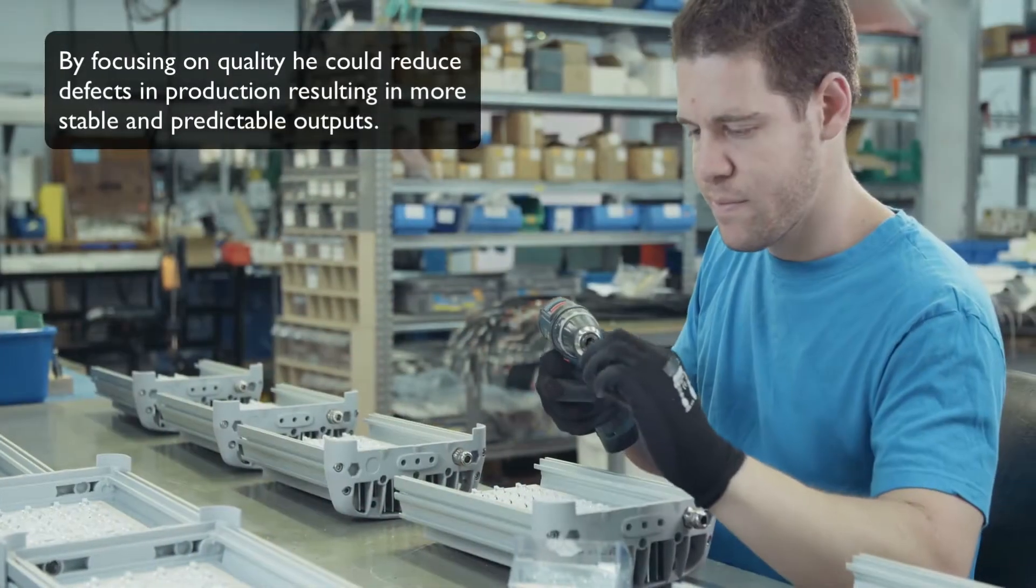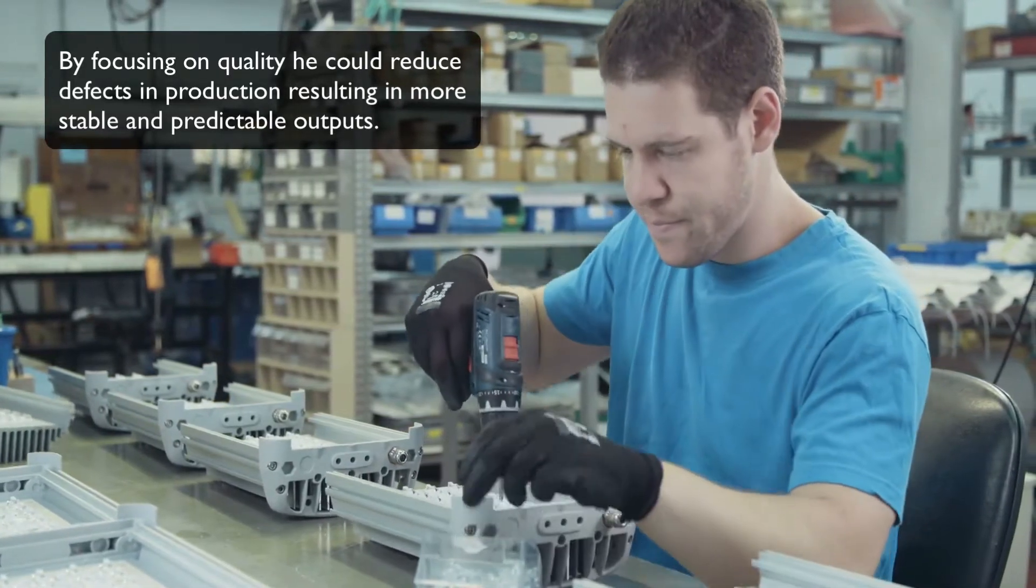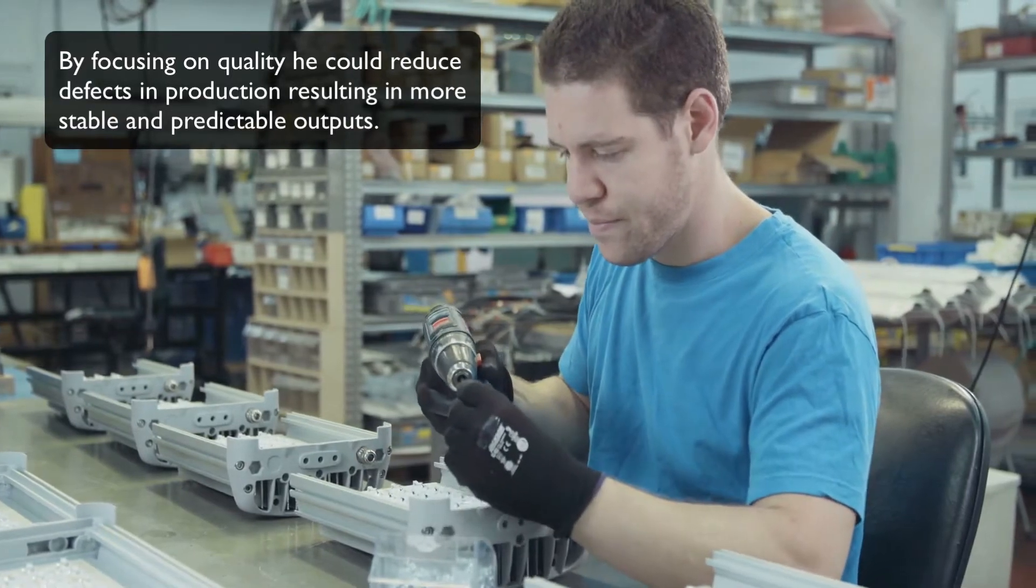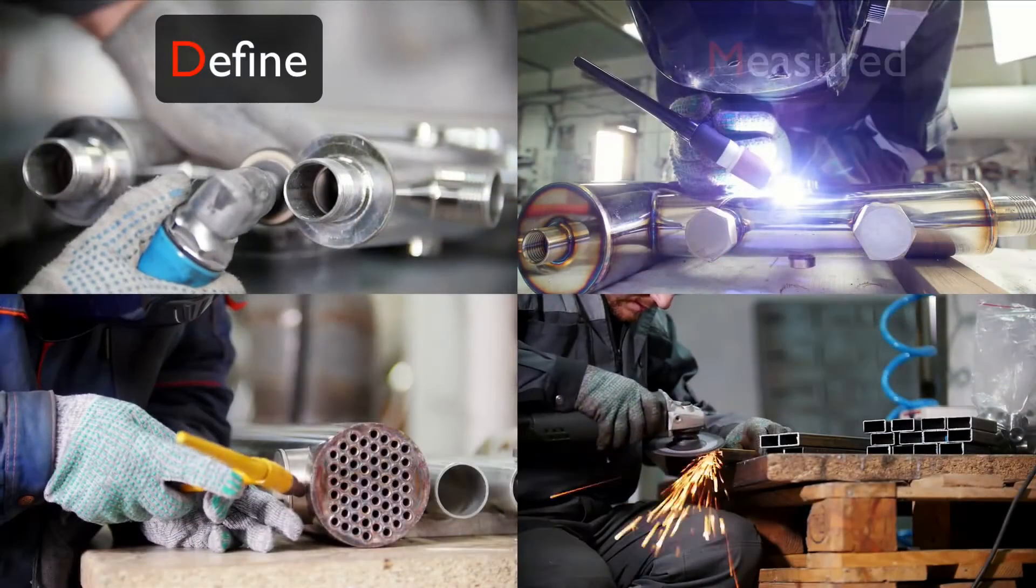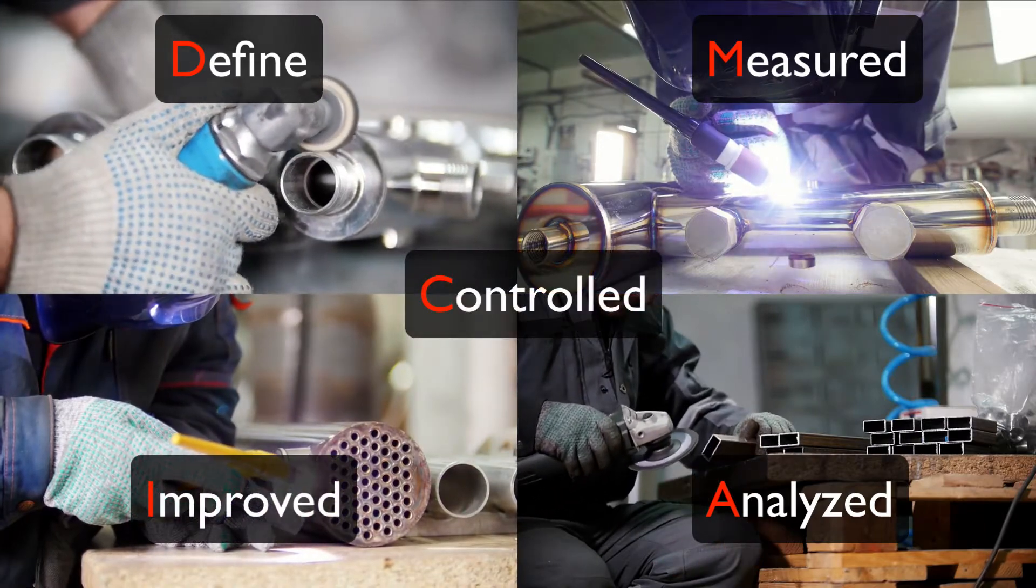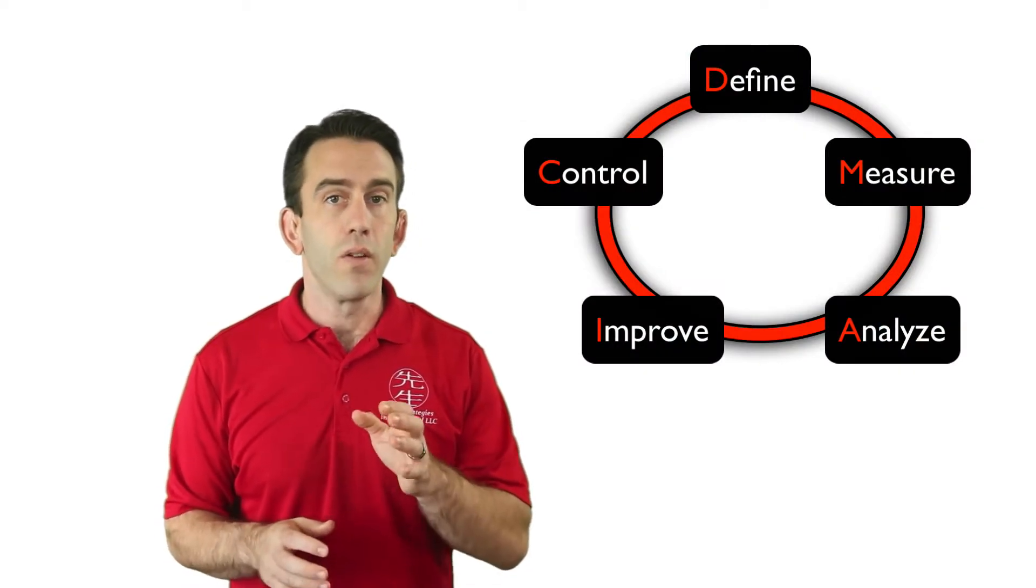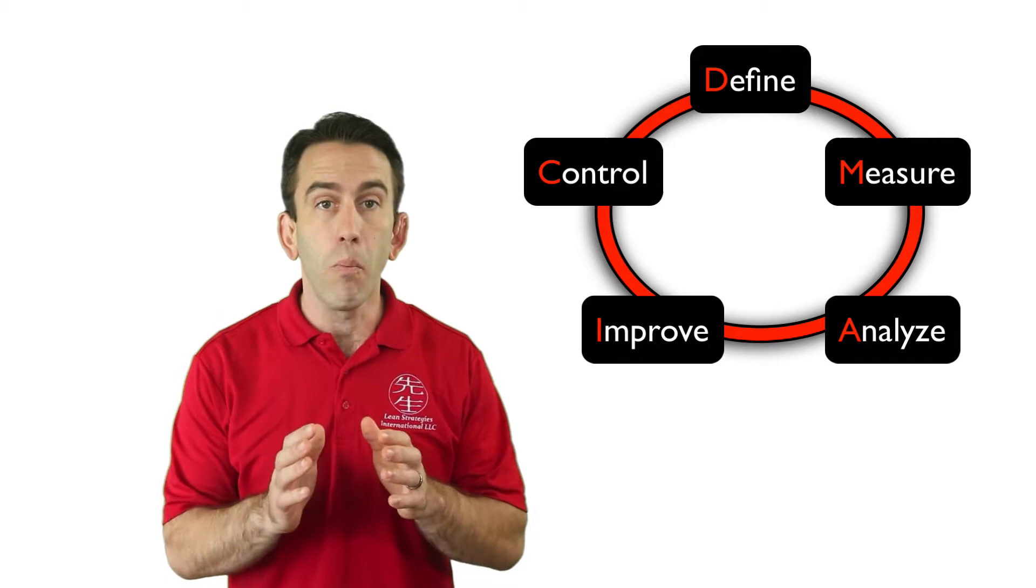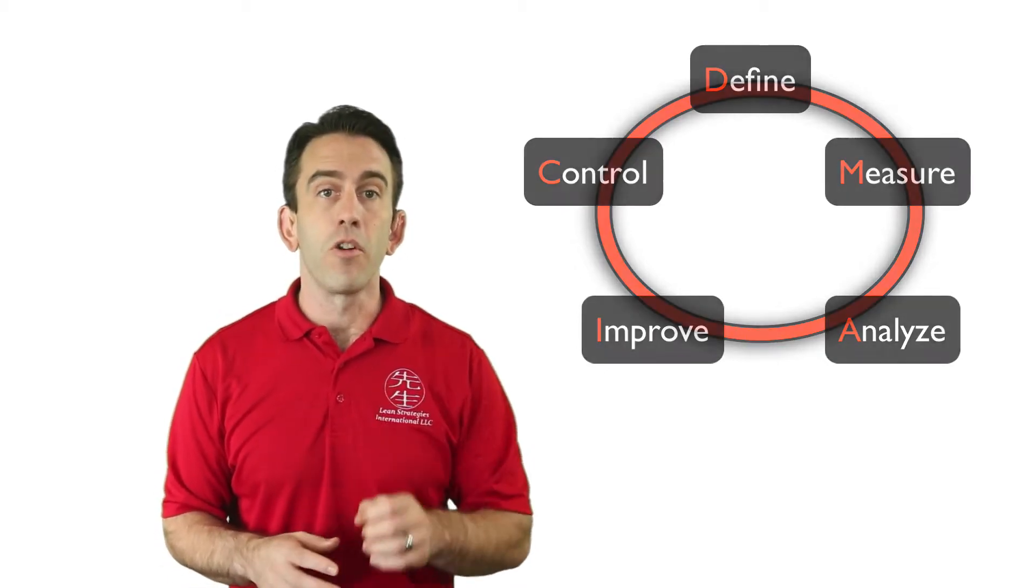Bill believed that by focusing on quality, he could reduce defects in production, resulting in more stable and predictable outputs. During one of his studies, Bill noticed that every business process could be defined, measured, analyzed, improved, and controlled. As time went on, Mr. Smith found that continuing to repeat this method resulted in reduced variations of process outputs, which ultimately helped him to meet customer demands.